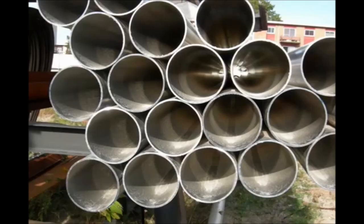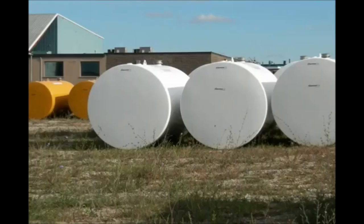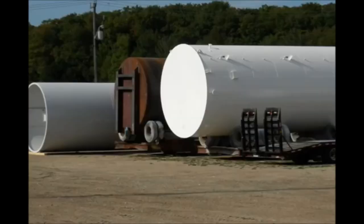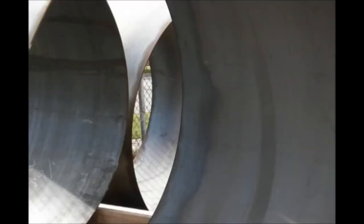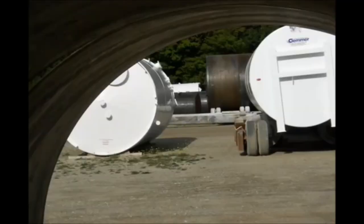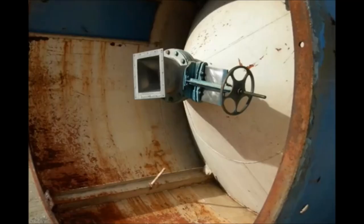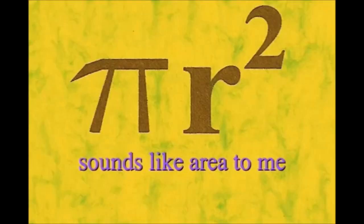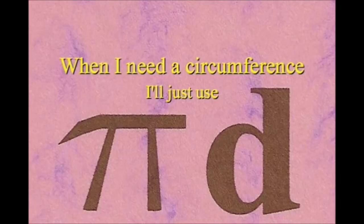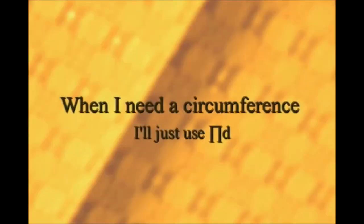It has a radius from center to rim. And its diameter's a line that goes from side to side while passing through the center, now isn't that simple. Pi r squared sounds like area to me, when I need a circumference, I'll just use pi d.